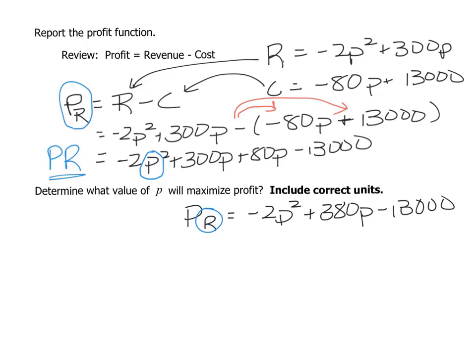In the next part it says determine the value of P that will maximize the profit. Again we're going to use that formula negative B over 2A to find the vertex, and we know this is going to work because once again we have a quadratic function, our coefficient of our squared term is negative, so this is going to be a parabola that's opening down and we need to find that vertex.